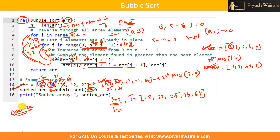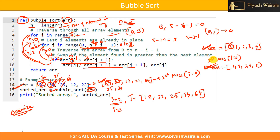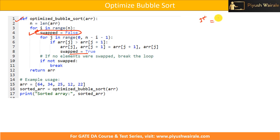To optimize, we want to stop the algorithm once no swaps are required, meaning the list is already sorted. The optimized bubble sort introduces one variable: swap equals False. We set it to True only when a swap actually occurs. After the first pass we get 1, 2, 3, 4, 5. In the second iteration when i equals 1, we check the conditions.